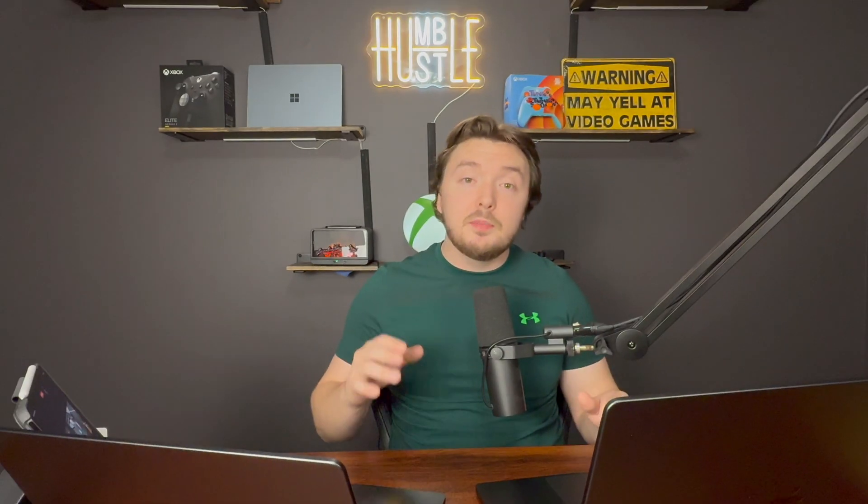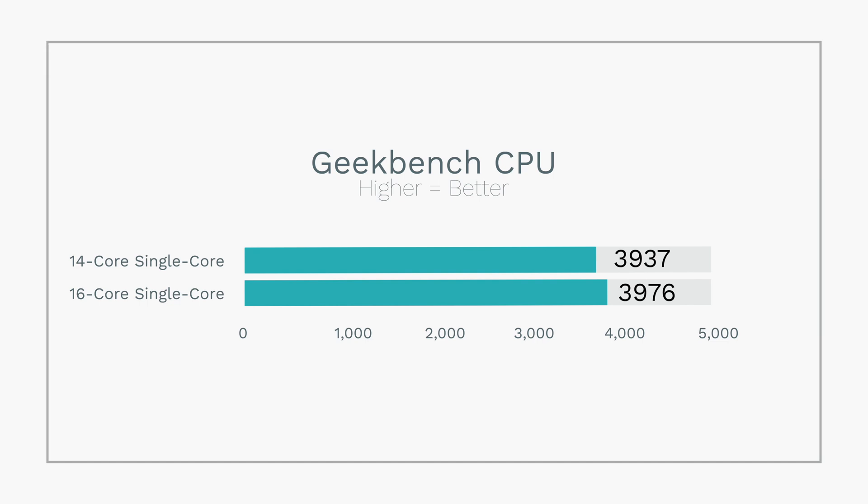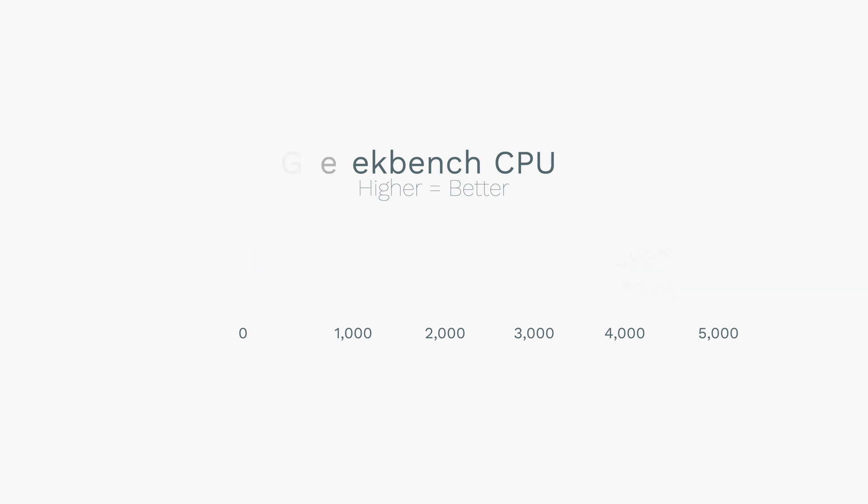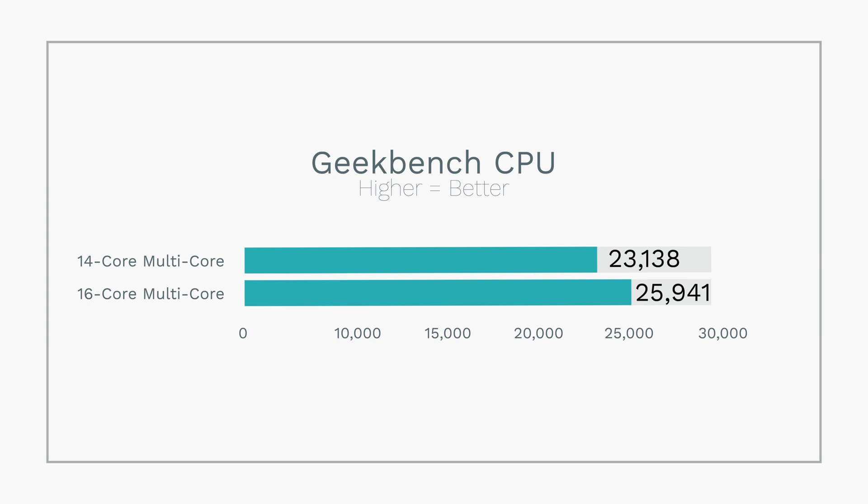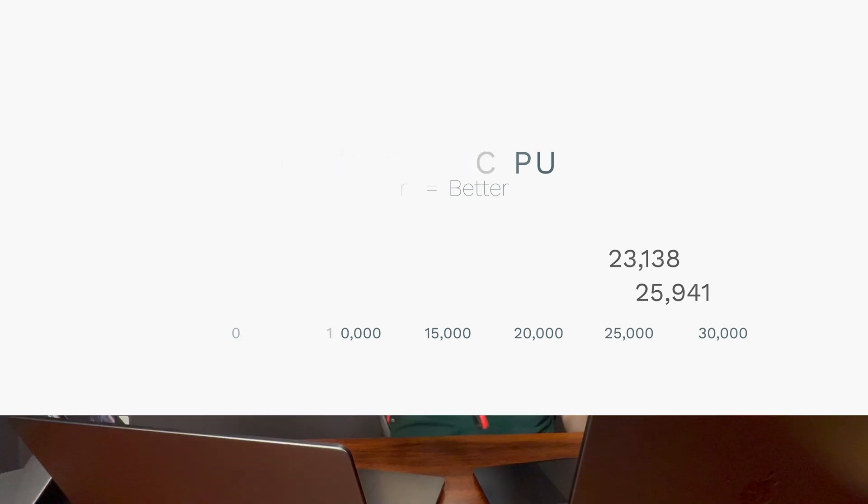Our Geekbench CPU tests are done. On the 14-core we have a single-core score of 3,937 and on the 16-core we have 3,976. For multi-core, the 14-core scores 23,138 and the 16-core scores 25,941. It doesn't seem like a huge difference in multi-core given you only get two more performance cores, but you are getting about a 12% uplift based on these benchmarks.